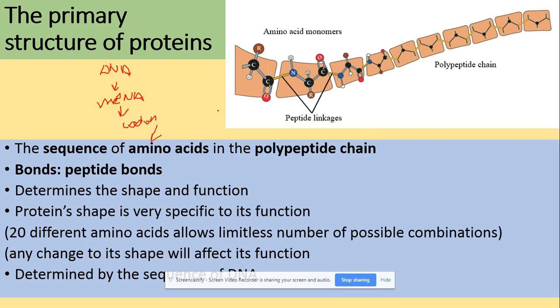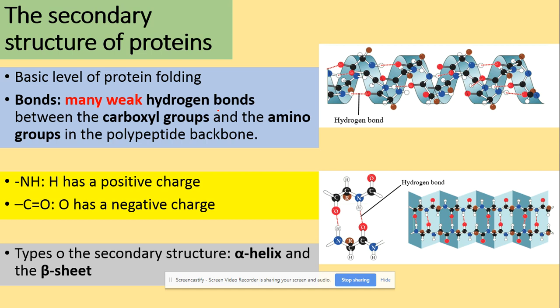Secondary structure is the basic level of protein folding. This is possible thanks to many weak hydrogen bonds, which are found between the carboxyl groups and the amino groups in the polypeptide backbone. The amino group has a hydrogen, giving a positive charge, and the carboxyl group, because of the oxygen, has a negative charge. The types of this basic level of folding are divided into alpha helix and beta pleated sheets.